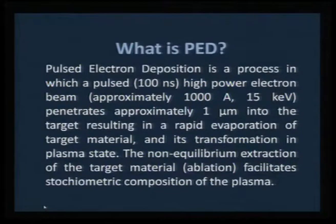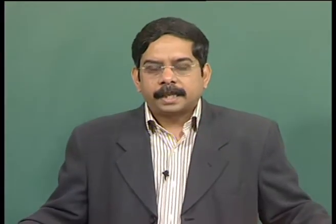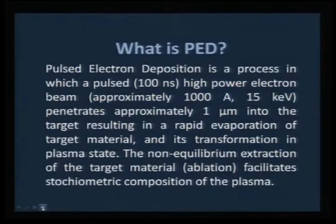Pulse electron deposition is a process in which a 100-nanosecond high-power electron beam, approximately 1000 angstroms at 15 kilo-electron volts, penetrates about 1 micron deep into the target. This causes rapid evaporation of the target material, transforming it into a plasma that gets deposited on the desired substrate. This non-equilibrium extraction ensures a fully stoichiometric composition of the plasma, enabling growth of single crystalline films.